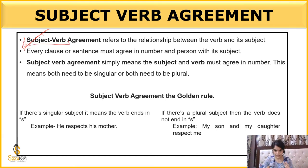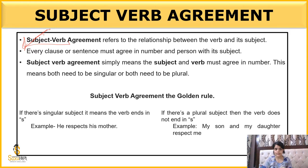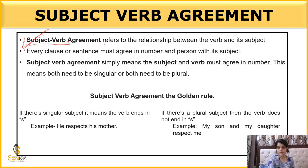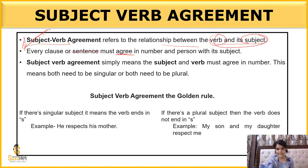What is subject-verb agreement? Subject-verb agreement means that if the subject is singular, we use a singular verb, and if it is plural, we use a plural verb. I have described the verb properly in a previous session — you can go and watch that if you have any doubt. The subject-verb agreement refers to the relationship between the subject and the verb, and every clause or sentence must agree in number and person with its subject.